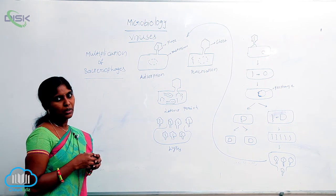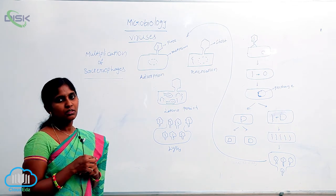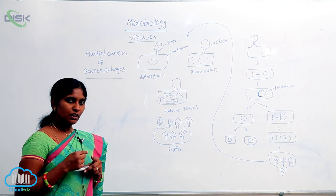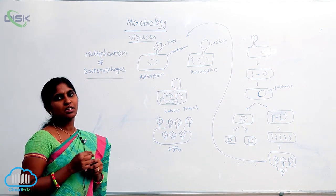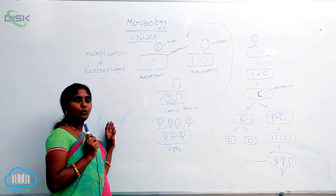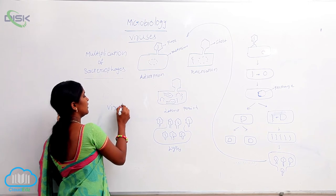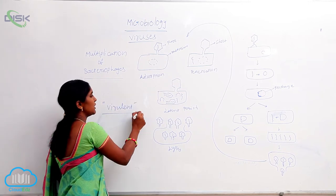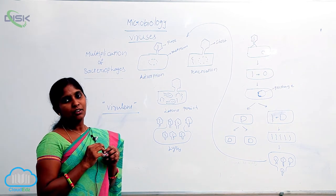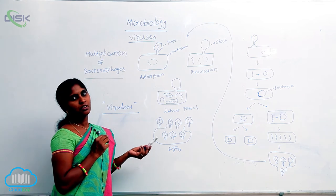Here, T2 bacteriophages are involved in their multiplication. At the end of the multiplication, the bacterial host is going to die — then only the new progeny can be released. This is the lytic cycle. The phages involved in the lytic cycle are called virulent phages, meaning they cause death to the bacterium cell after completion of multiplication. You can see the procedure of lytic cycle here.